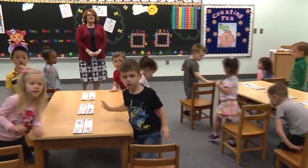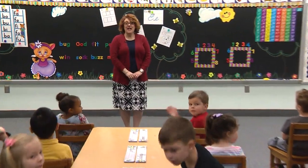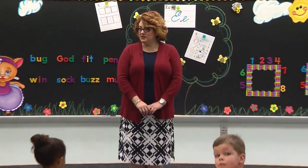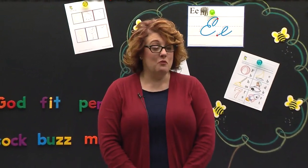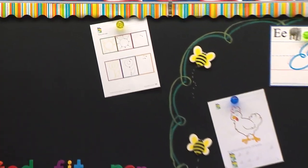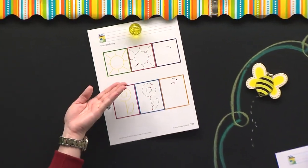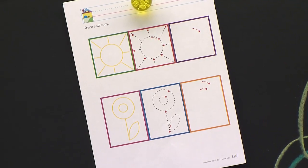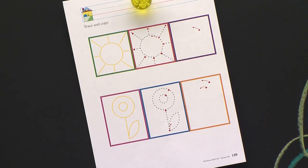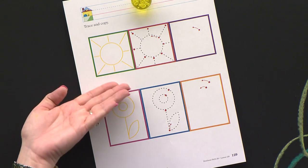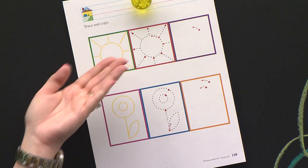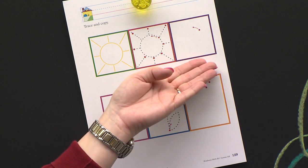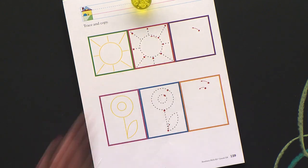Nice job, you may be seated. We have a very fun paper today, and this paper is going to require some following directions, some watching with our eyes and thinking in our brain. Let's look at our paper right now. Our paper has some fun things that we're going to trace and copy, kind of like when we do writing — how we trace a letter and then you make your very own. We're going to make a sunshine, trace it, and then make it all by yourself.